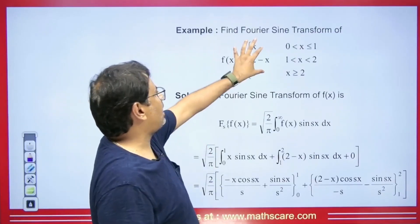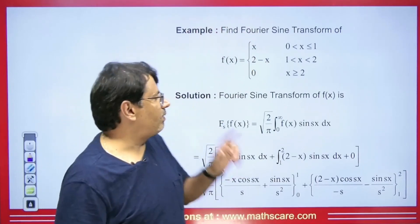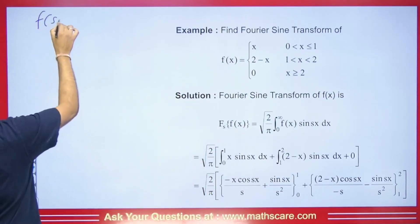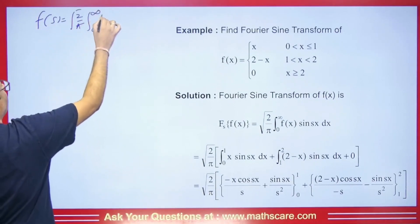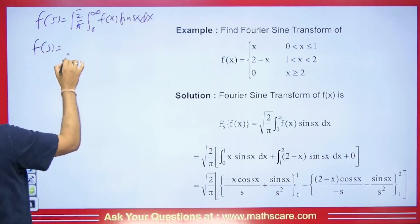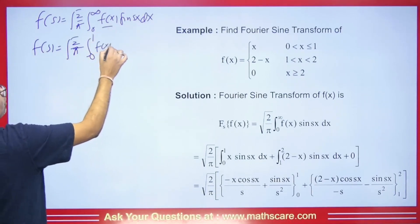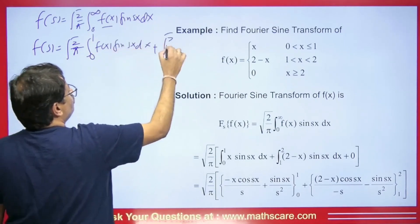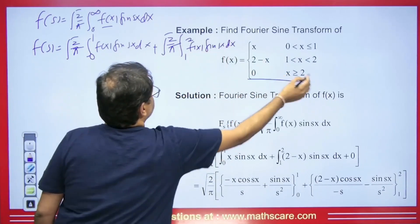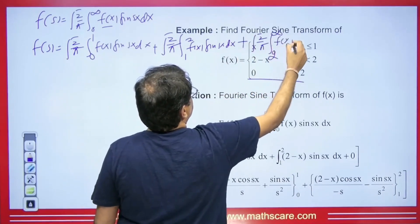First question: find the Fourier sine transform of a piecewise function. The function takes different values at different intervals. The FST formula is root(2/π) from 0 to infinity f(x) sine(sx) dx. From 0 to 1, f(x) = x; from 1 to 2, f(x) = 2 − x; and for x > 2, f(x) = 0. So the transform becomes root(2/π) [integral from 0 to 1 of x sine(sx) dx + integral from 1 to 2 of (2 − x) sine(sx) dx].